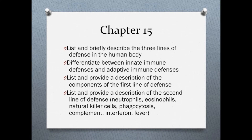In Chapter 15, we investigated the components of the innate immune system. Students need to be able to differentiate between the three lines of defense and recognize which lines of defense and their components are part of innate immunity and which are part of adaptive immunity. Students need to list and describe the components of the first line of defense and second line of defense. Table 15.6 summarizes the components of both the first and second lines of defense.